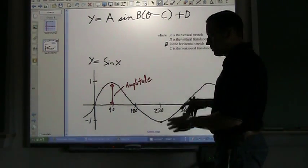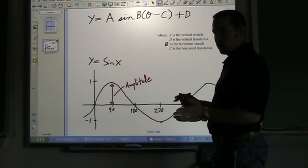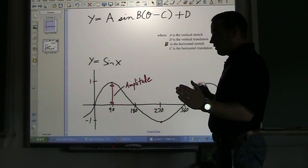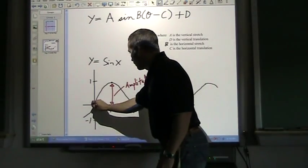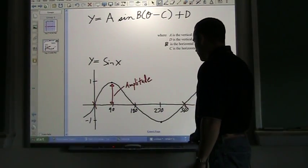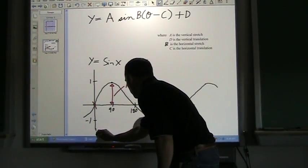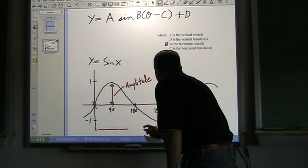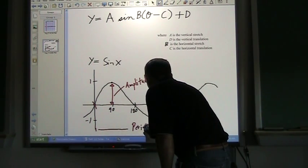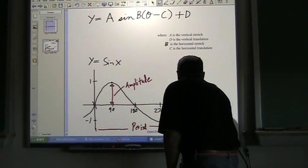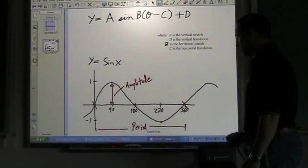As I just discussed, the period is how far you need in order to be able to graph one full rotation. So this one, zero to 360. So from here to here, one full period.